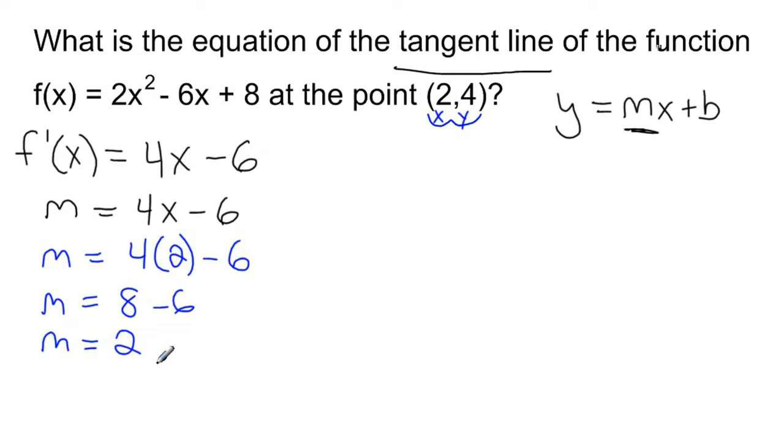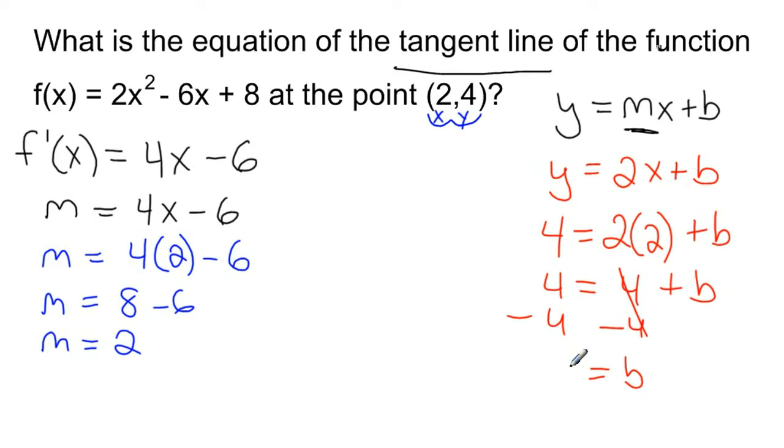Okay, so the slope of our line is 2. So then I go up to my equation here and we get y equals 2x plus b. Now I'm going to go ahead and try to solve this for b to get the full equation here. Well, I have an x and a y value and I have part of an equation that has x and y in it. So you just need to substitute this point into your equation. So we get 4 equals 2 times 2 plus b. So we get 4 equals 4 plus b. So we wind up subtracting 4 from both sides and we wind up with b equals 0.